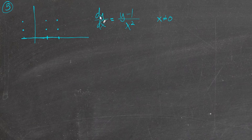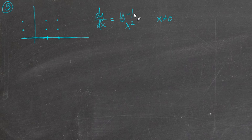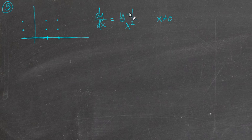The derivative of a function tells you the slope of that function at any given point. We need a point (x, y) to plug into this expression, and once we do that, it'll tell us the slope, and then we draw the slope in the slope field. So at negative 1, 2: 2 minus 1 up top is 1, and down here we have negative 1 squared, which is positive 1. So we have 1 divided by 1, which gives us a slope of 1.